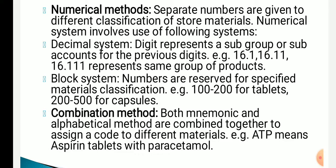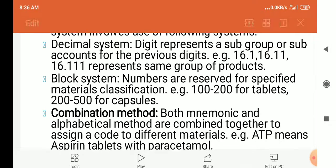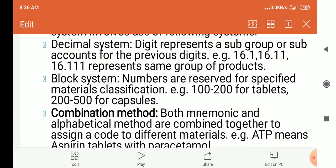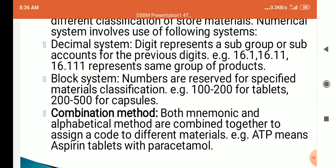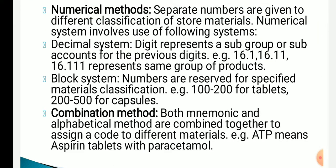The numerical method has two types: decimal system and block system. In decimal system, subgroups are used — for example, 16.1 refers to a specific group of tablets. Within that, 16.1.1 could refer to paracetamol and 16.1.2 to ibuprofen under the analgesic group. Block system assigns block numbers — for example, 100–200 represents only tablets, 200–300 represents only capsules.